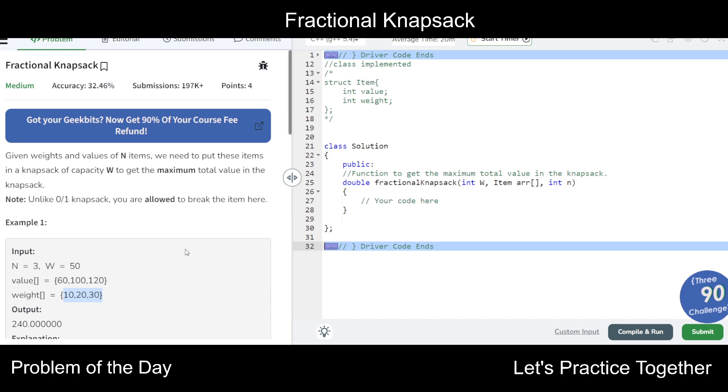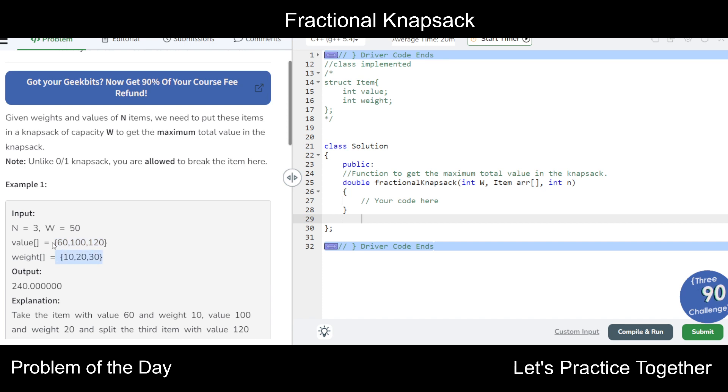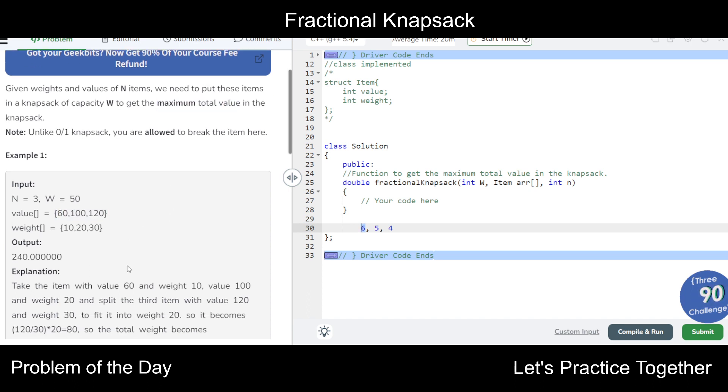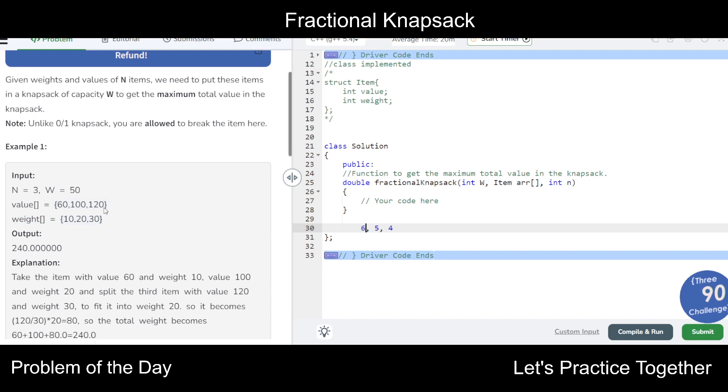Now what are we going to do in this question? If we look at this array: 10, 20, 30, here is 60, 100 and 120. First, we will sort it. We will sort it with the value of fraction. What is the value of 1 kg weight? First it is 6 rupees, second is 100 divided by 20, which is 5, last is 4. So this is my ascending order, this is sorted: 6, 5, 4. We will include greater value first because we want to maximize the total value.